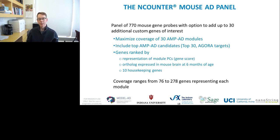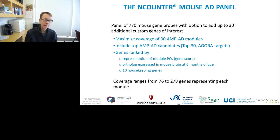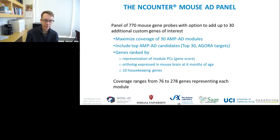This set up a question for us: how do we take a mouse model and effectively screen its gene expression patterns relative to all of these diverse and interesting Alzheimer's-related modules in humans? Ultimately we can do RNA-seq, but on a sample-by-sample basis for high-capacity screening, we wanted a quicker option to get at this information more effectively. That's when we turned to the NanoString group and helped them develop the NCounter mouse AD panel — a panel of 770 mouse gene probes with an option to add up to 30 additional custom genes, designed to cover these 30 AMP-AD modules.